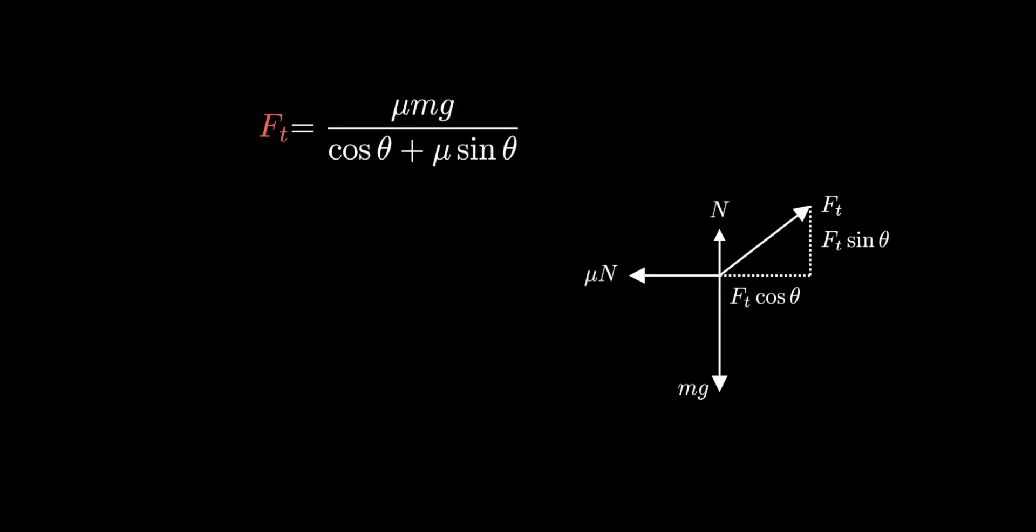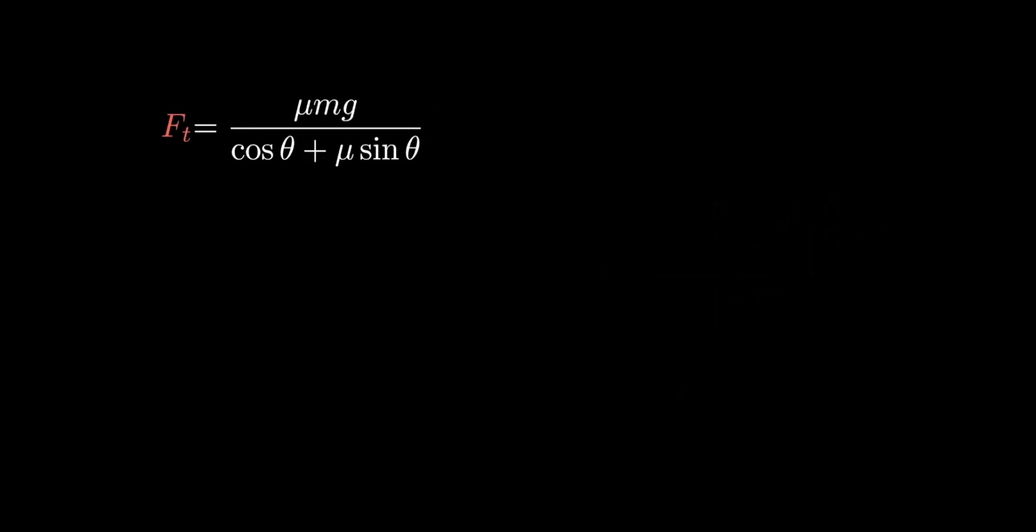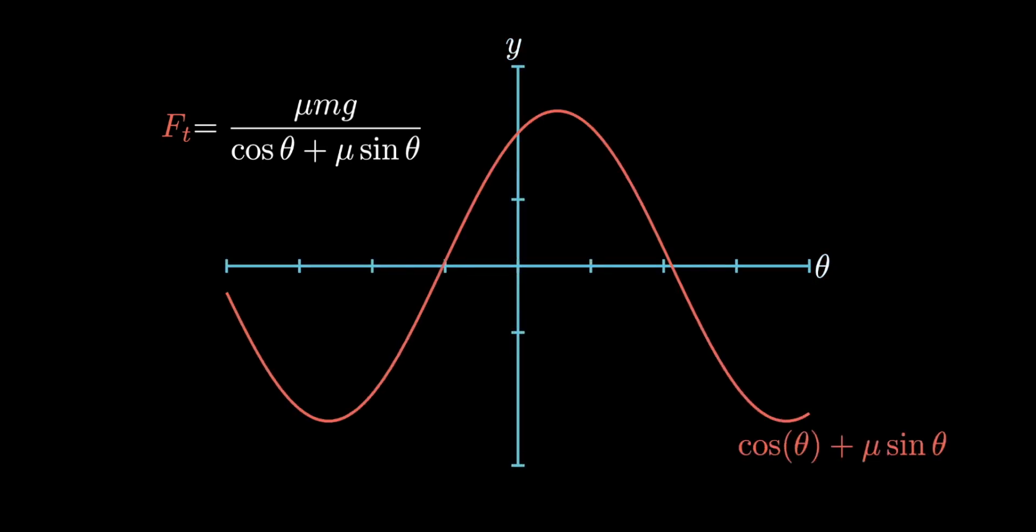To minimize this expression, we need to find the angle that maximizes the denominator, which we see as a sinusoidal function. Using calculus, we can identify the optimal angle to be θ equals arctan μ, corresponding to a maximum value of √(1 + μ²). Substituting this in, we get our minimum force of tension.